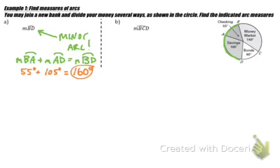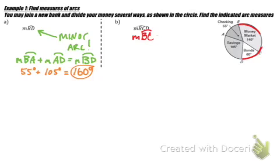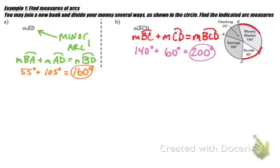Now moving on to the measure of arc BCD. Since BCD has three letters, we choose the bigger of the two arcs, going around to the right. So the measure of arc BCD equals the measure of arc BC plus the measure of arc CD. The measure of arc BC is 140 degrees plus the measure of arc CD is 60 degrees. So 140 plus 60 gives 200 degrees for the measure of arc BCD.